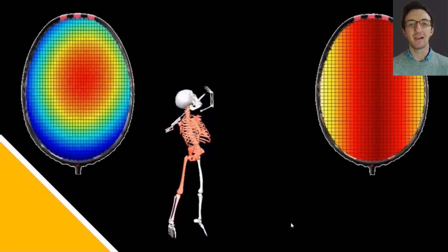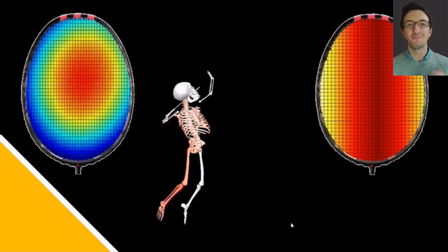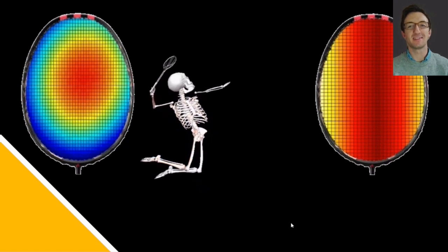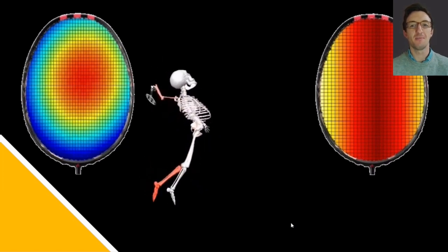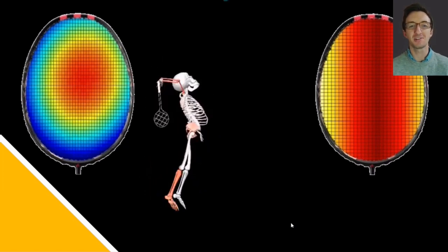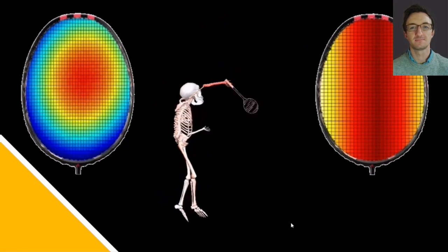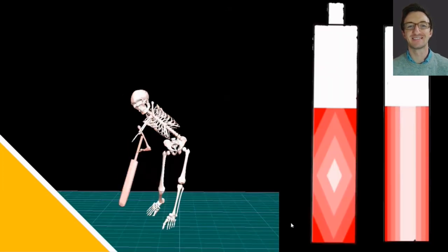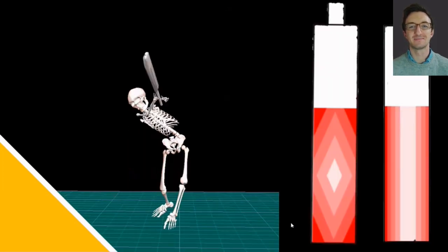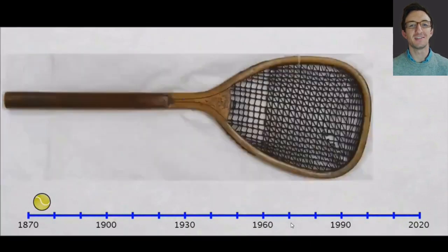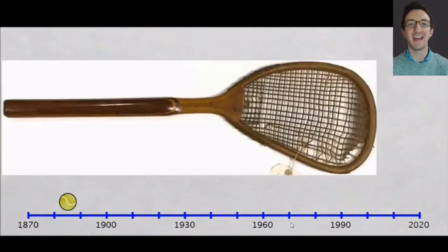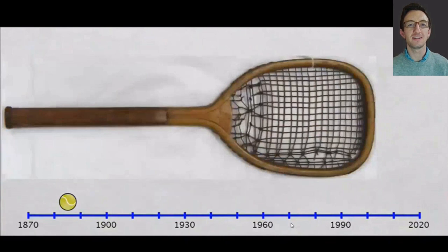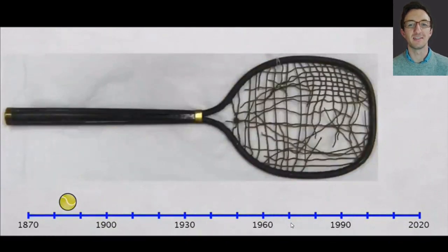Understanding the effects of impact location in racket or bat sports. These topics will be discussed in relation to research on the badminton smash and cricket power hitting, as well as historical racket development in tennis. Implications for other sports and research topics will also be discussed.